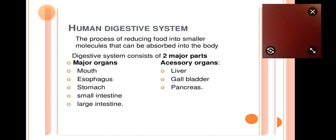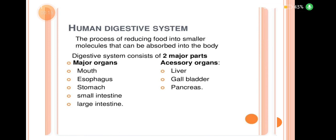So what is the Human Digestive System? It is the process of reducing food into smaller molecules that can be absorbed into the body. What we eat goes through the digestive process, meaning food is divided into smaller particles and smaller molecules, and further absorption of nutrients takes place.